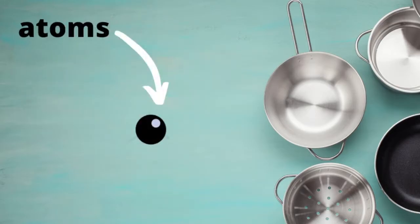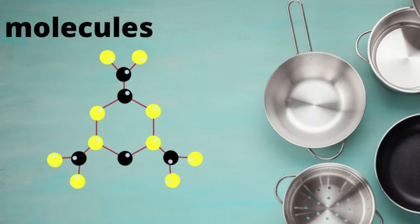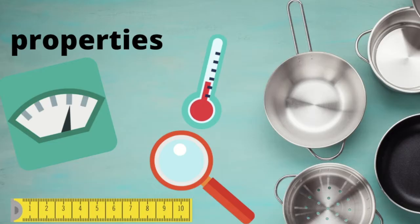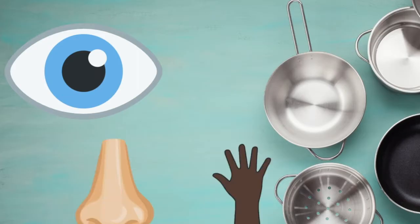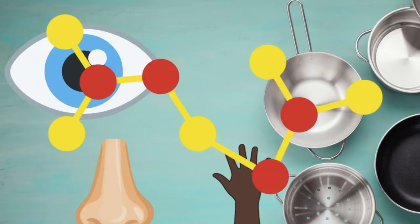All matter is made up of tiny particles called atoms. There are 118 different types of atoms that we know of. Atoms can join with other atoms to form molecules. The types of atoms and the arrangement of the atoms in a material give that material its properties or characteristics. This means that everything we love about our food — the flavor, the texture, the smell — are all caused by the organization of the particles in that specific food.